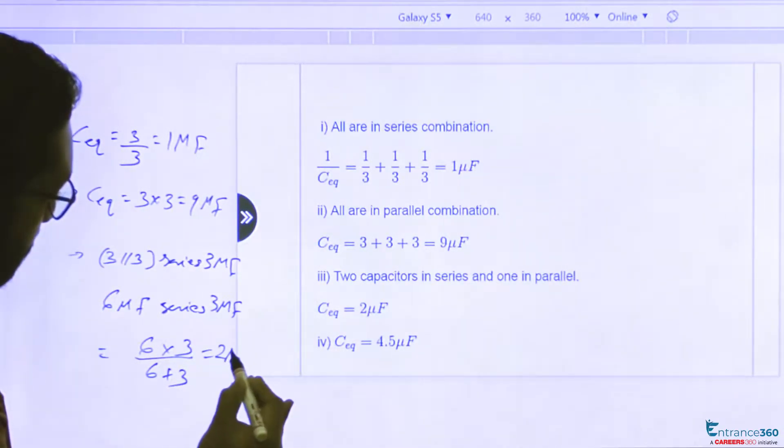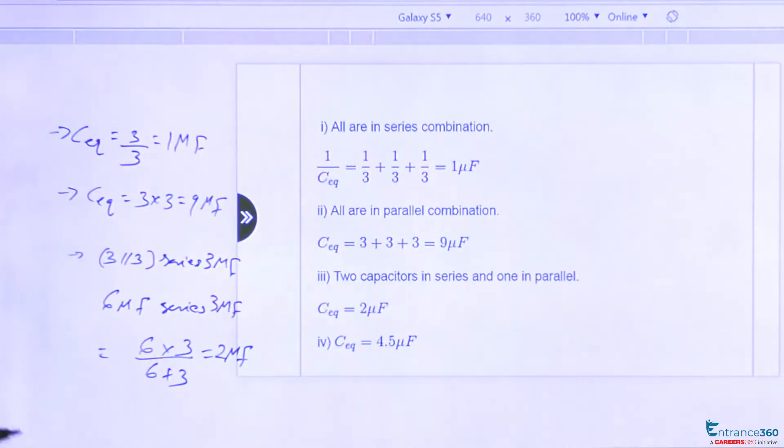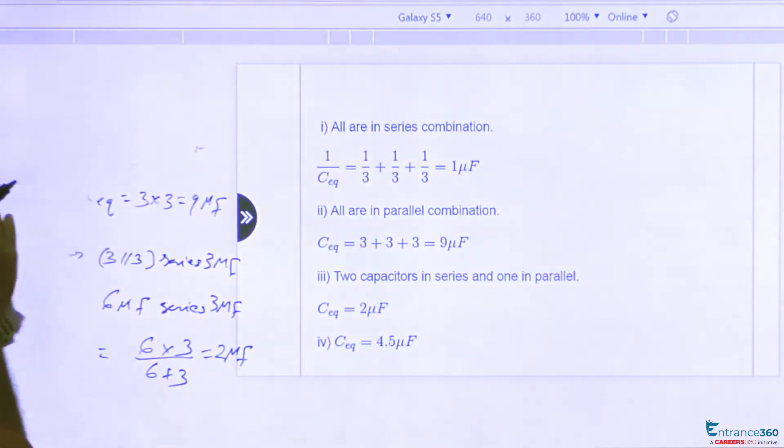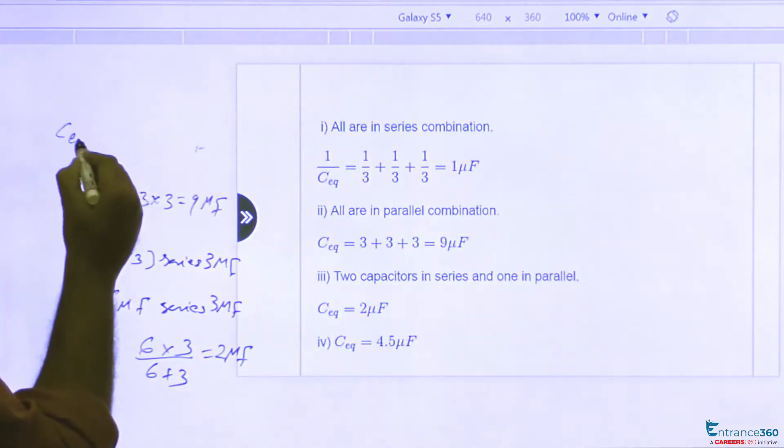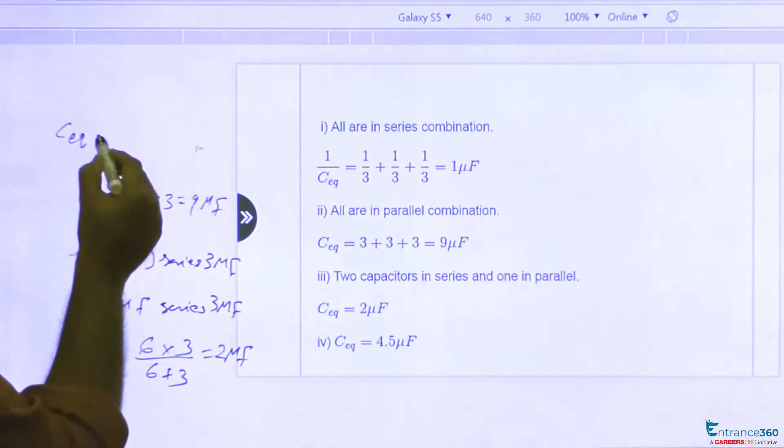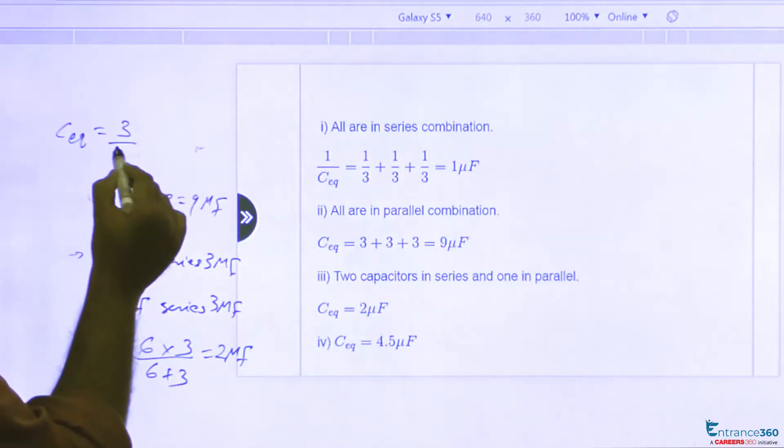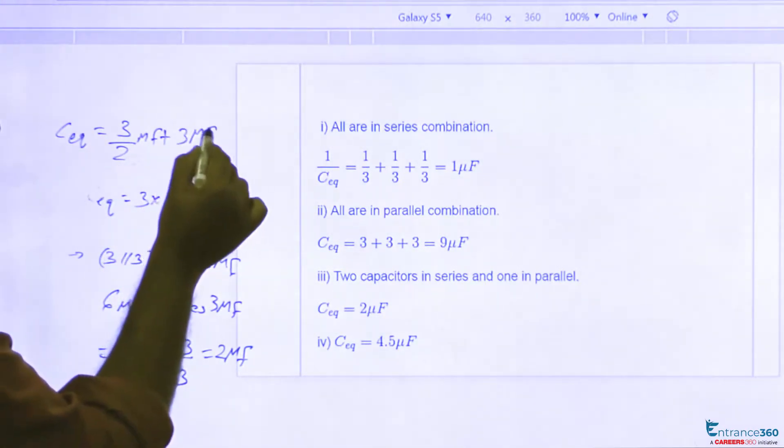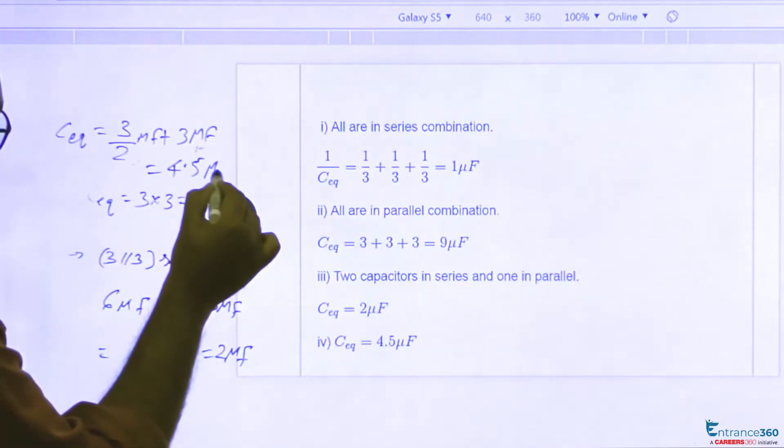This is equal to 2 μF. And if we connect two in series and one in parallel, two in series will give 3 divided by 2 μF plus one in parallel, which is equal to 4.5 μF.